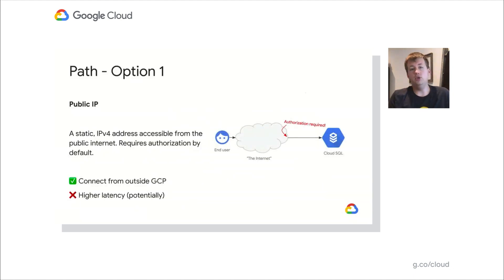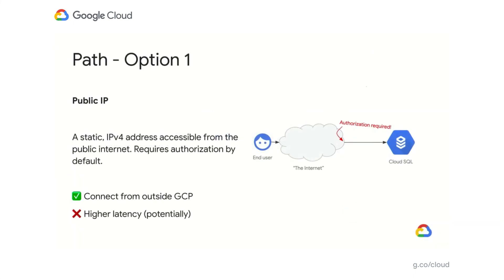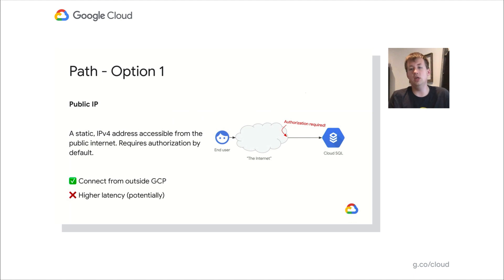When you're selecting a path, you have two different options. The first option is public IP. Public IP is a static IPv4 address that's accessible from the public internet. As long as you have access to the internet, you can potentially connect to your Cloud SQL instance. By default, authorization is required since we don't want anyone with access to the internet connecting to your application. One of the benefits of public IP is that you can connect from outside GCP, but one of the drawbacks is you may have higher latency since you're connecting over the internet instead of using an internal network.